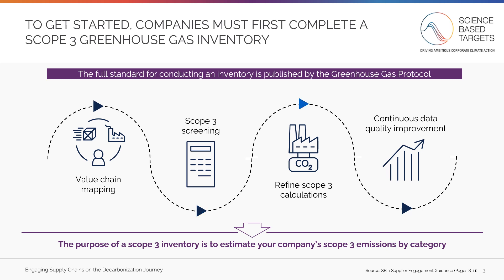This will highlight your largest categories by emissions and help prioritize reduction opportunities. Once categories have been prioritized, Step 3 is to refine your Scope 3 calculations to get an even more accurate emissions estimate. The Greenhouse Gas Protocol's standard walks you through how to do this in detail, as well as the data required. Finally, as Scope 3 emissions are calculated each year, Step 4 is to continuously improve your data quality, which will enable more efficient and robust calculations over time.